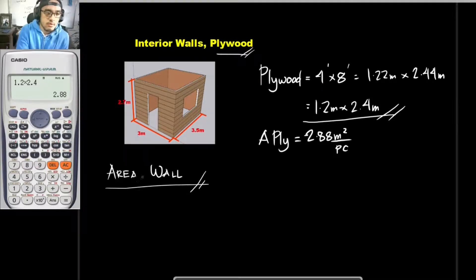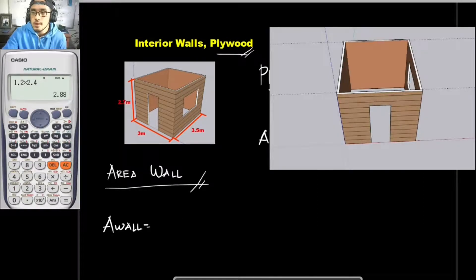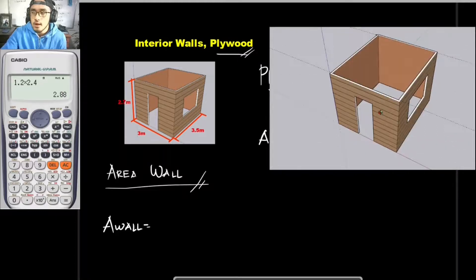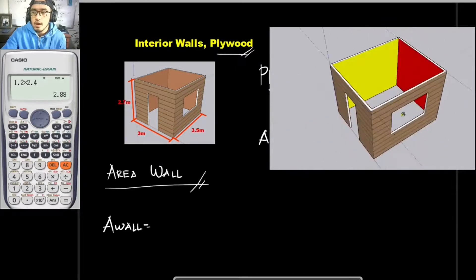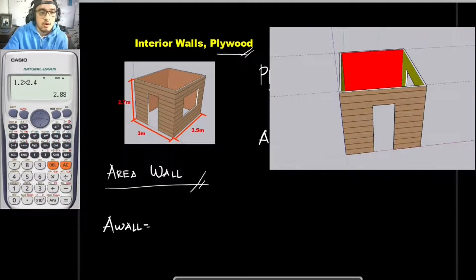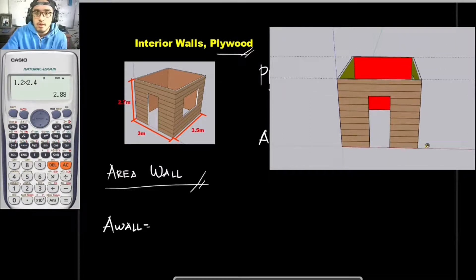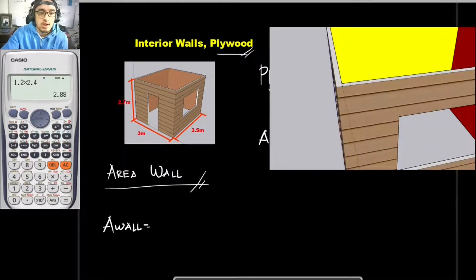The first thing we should do is solve for the area of the wall, which is the interior part. Let's show our three-dimensional figure once again. We would be solving for the yellow and red interior wall sections. The end-to-end dimension of one part is 3 meters, and the other is 3.5 meters. From that, we would be subtracting the thickness, which is 3 inches, since we are using 3-inch wall studs.